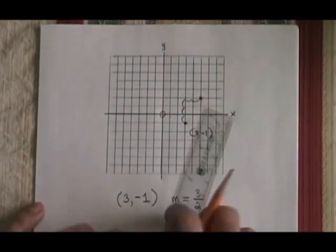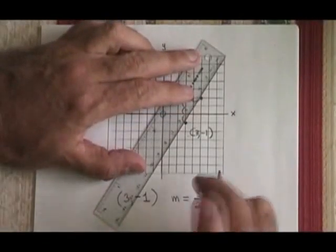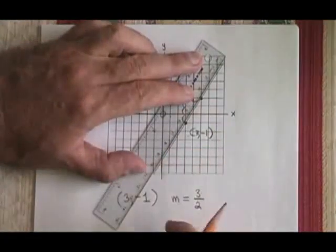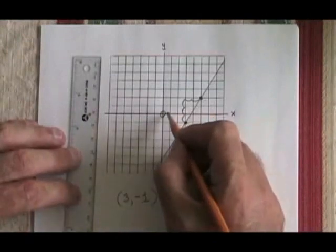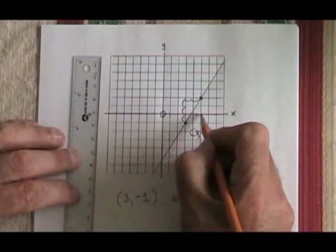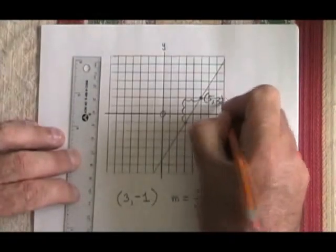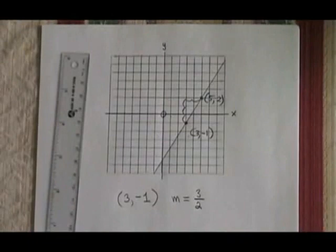All that's left to do is draw the line, and I make sure to draw it all the way through the graph, not just between the two points, and to identify the second point that I found. This second point has an x value of 5 and a y value of 2. So I write 5, 2. I'm finished. I have used the rise over run trick to graph a straight line.